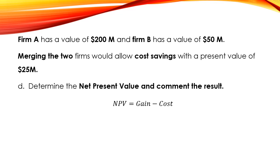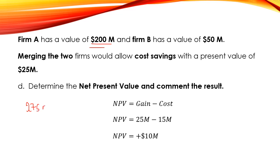Finally, the net present value equals the gain minus the cost of merger: 25 minus 15 equals 10 million dollars. Since the NPV is positive, the shareholders of Firm A started with a firm worth 200 million dollars and end up with a firm worth 275 million dollars. Although they paid 65 million dollars to Firm B, they gained a net present value of 10 million dollars, so Firm A should go ahead and acquire Firm B.